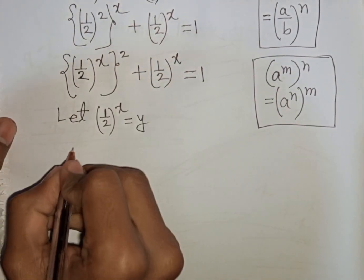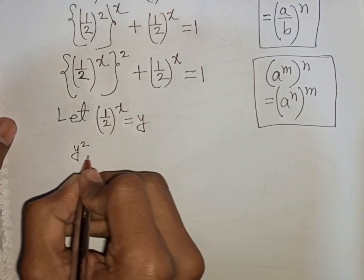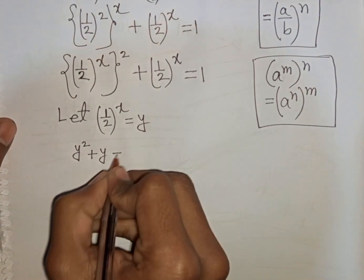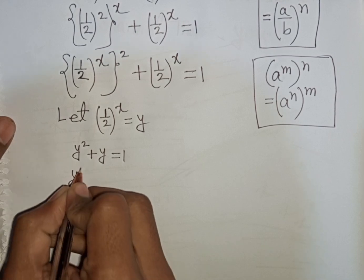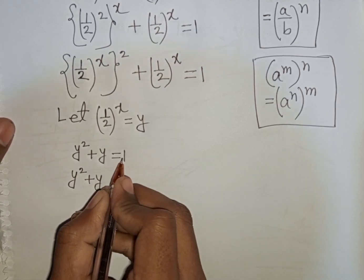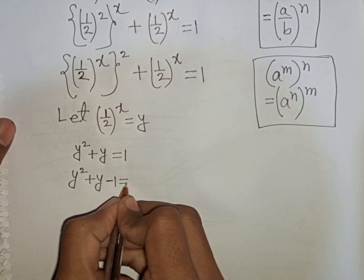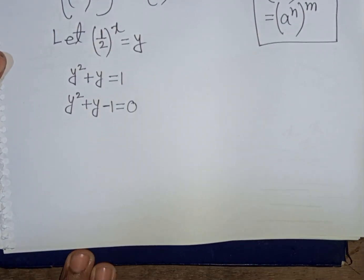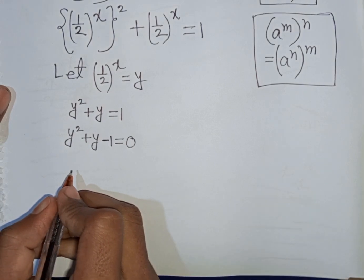Our equation becomes y squared plus y equals 1. We can rewrite this as y squared plus y minus 1 equals 0. Now we can apply the quadratic formula.